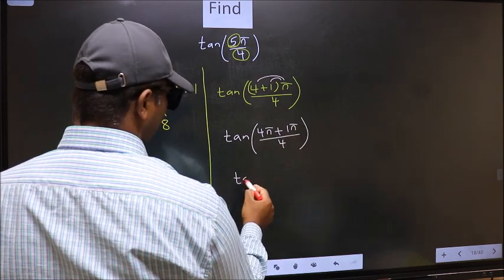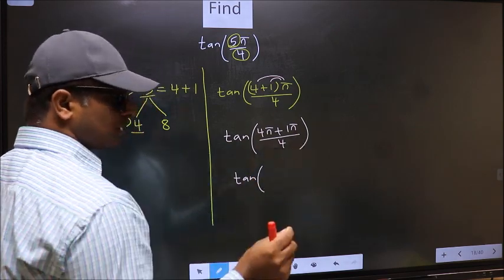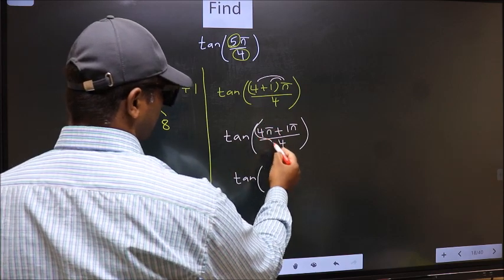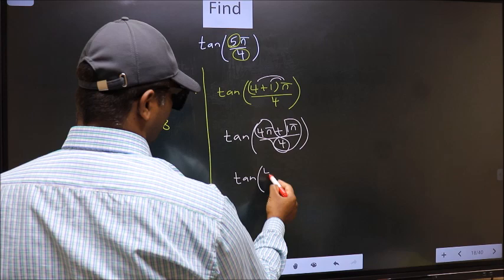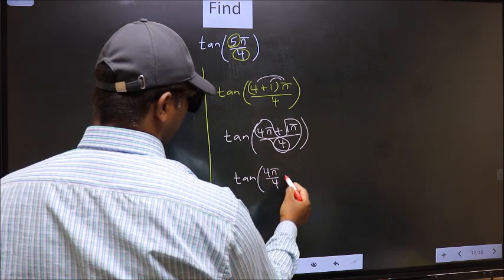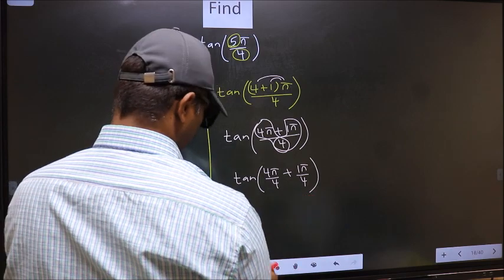Now tan—over here, you should split the denominator this way: 4π/4 plus 1π/4.